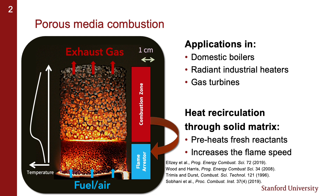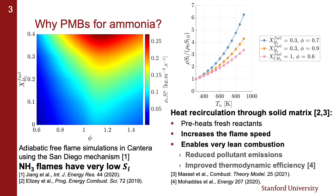This allows what's called superadiabatic combustion, where this heat recirculation allows a peak temperature higher than the normal adiabatic flame temperature to be reached during the combustion process, and this helps increase the flame speed. In the context of ammonia combustion, this is particularly interesting because the laminar flame speed of ammonia-air mixtures is particularly low. On the diagram shown here on the top left, I computed the laminar consumption speed, which is the product of density times laminar flame speed, as a function of equivalence ratio and hydrogen volume fraction in an ammonia-hydrogen fuel blend. This was done using free flame simulations in Cantera with the chemical mechanism from the University of California at San Diego.